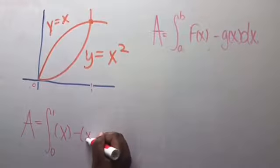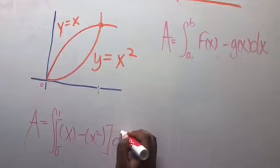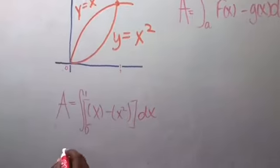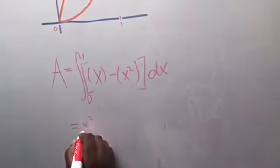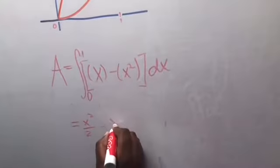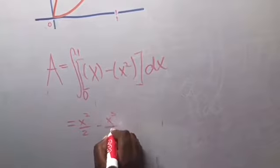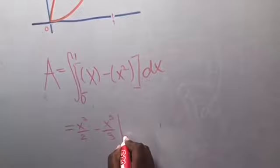The next step will be taking the antiderivative. The antiderivative of x is x squared over 2 subtracted by the antiderivative of x squared, which is x to the third over 3, evaluated from 0 to 1.